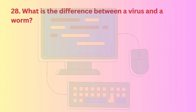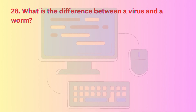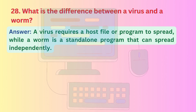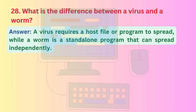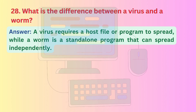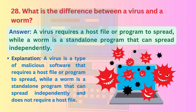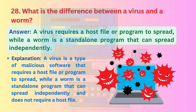Question 28: What is the difference between a virus and a worm? A virus is a type of malicious software that requires a host file or program to spread, while a worm is a standalone program that can spread independently and does not require a host file.